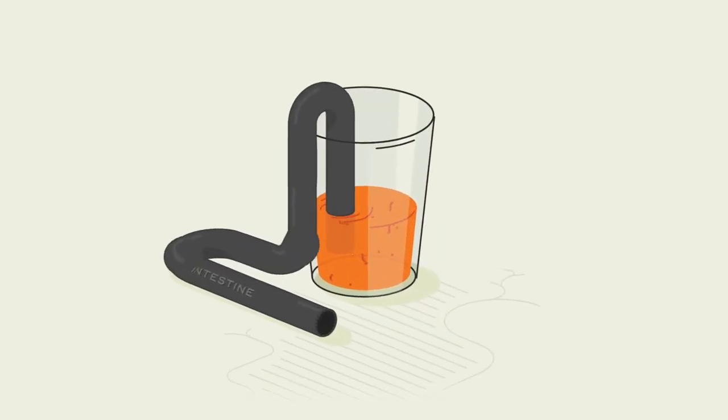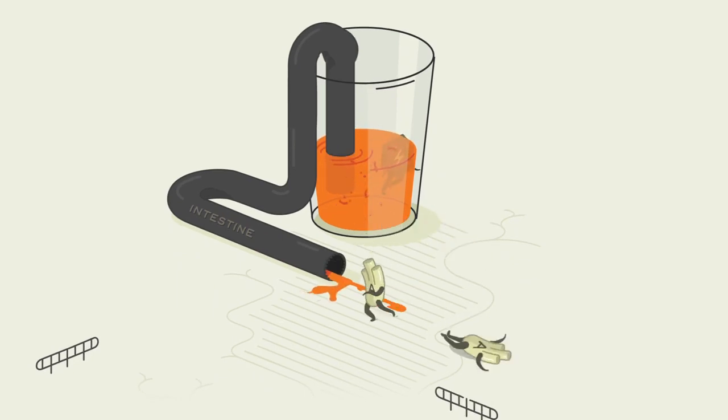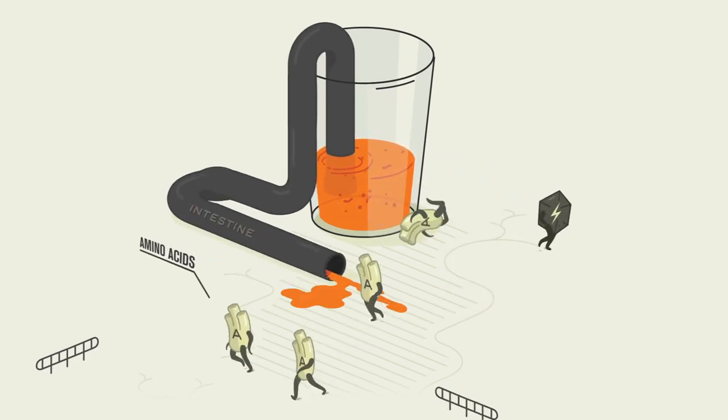Enzymes in your stomach and intestine break apart the protein into peptides, combinations of amino acids, a.k.a. your body's building blocks.